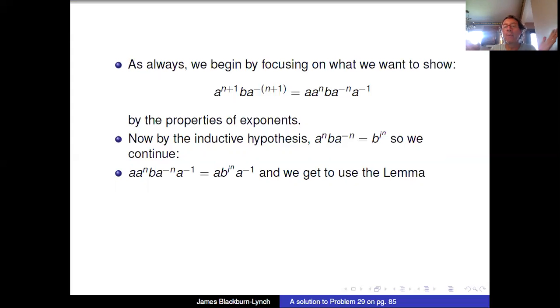i^n is just a number, so we get to use the lemma, and in particular we know that ab^(in) a^(-1) is b^(in·i). That's what the lemma said, you multiply by i, which is b^(i(n+1)), and notice that proves our theorem. That is exactly what we wanted to show.